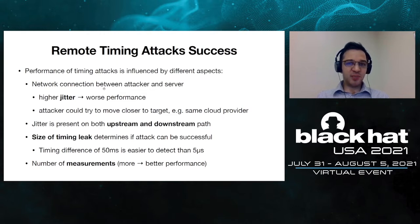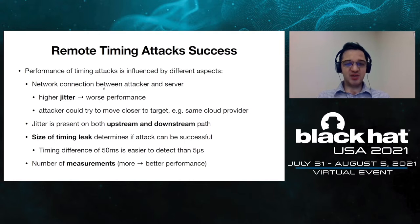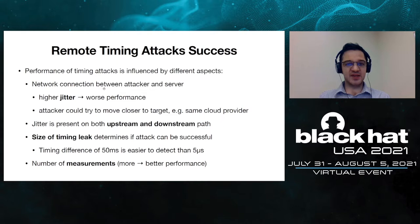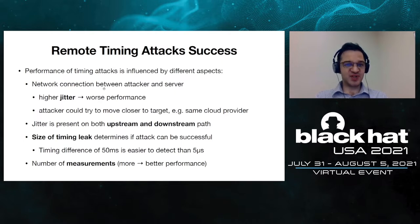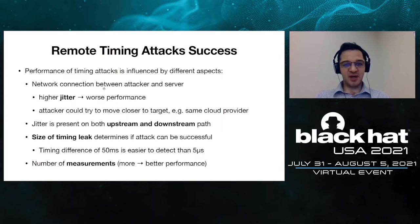Jitter can be present both on the upstream requests and on the downstream responses. Another important factor is the size of the timing leak — a large 50-millisecond leak is much easier to exploit than a 5-microsecond leak. Finally, the number of measurements you can make also heavily influences performance: more measurements mean better attack performance.